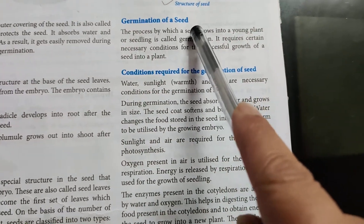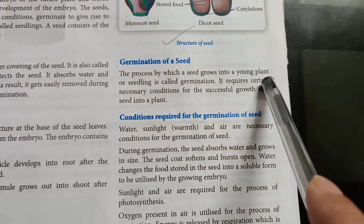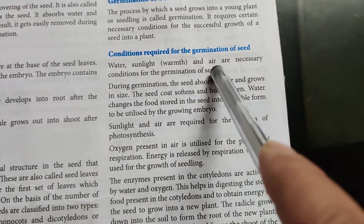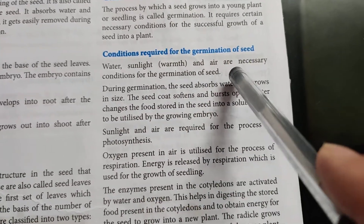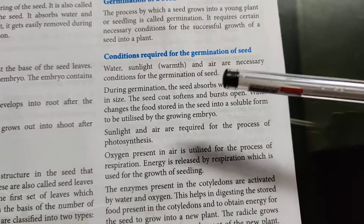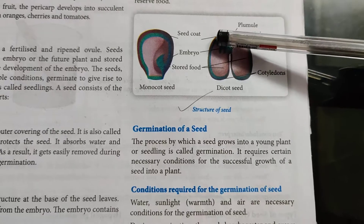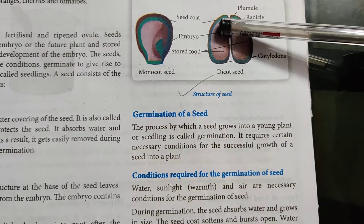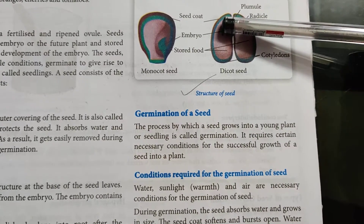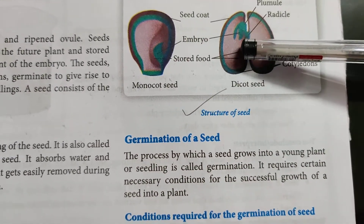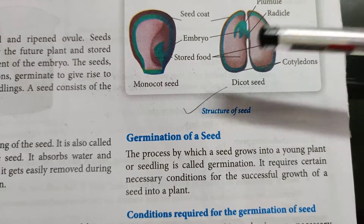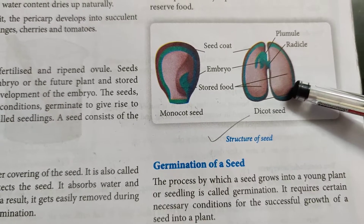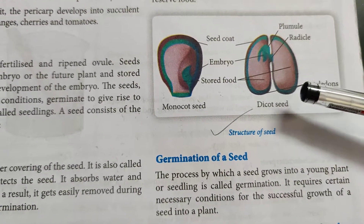Germination of seed: the process by which a seed grows into a young plant is called germination. Certain conditions are required — water, sunlight, and air. During germination, seeds absorb water and grow in size. The seed coat softens and bursts open. Water changes the food stored in the seed into a soluble form to be utilized by the growing embryo. Sunlight is required for photosynthesis. Oxygen present in the air is utilized for respiration, and the energy released is used for the growth of the seedling.